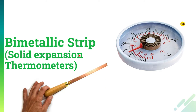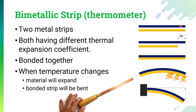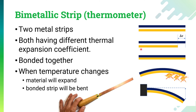The bimetallic strip uses the solid expansion principle, so it uses solid materials. In a bimetallic strip, we have two metal strips, and both strips have different thermal expansion coefficients. Whenever the temperature changes, the material will expand — a higher expansion coefficient means higher expansion, and a lower coefficient means lower expansion. If we have two materials with different thermal expansion coefficients, when heated they will expand by different amounts, causing a variation in length.